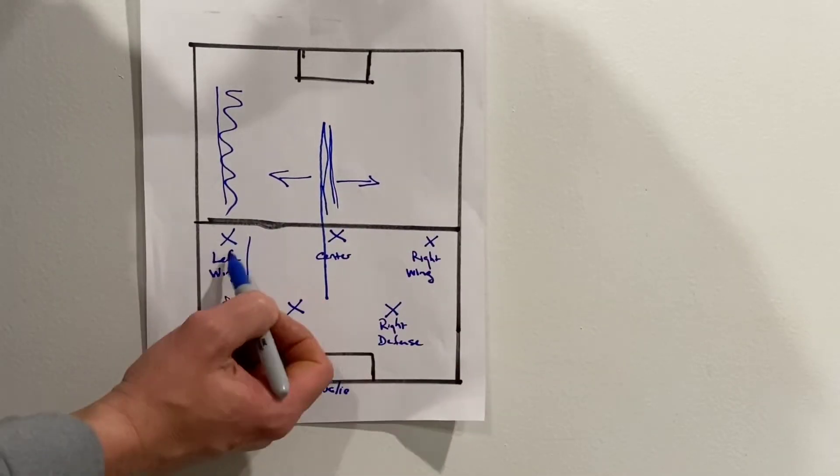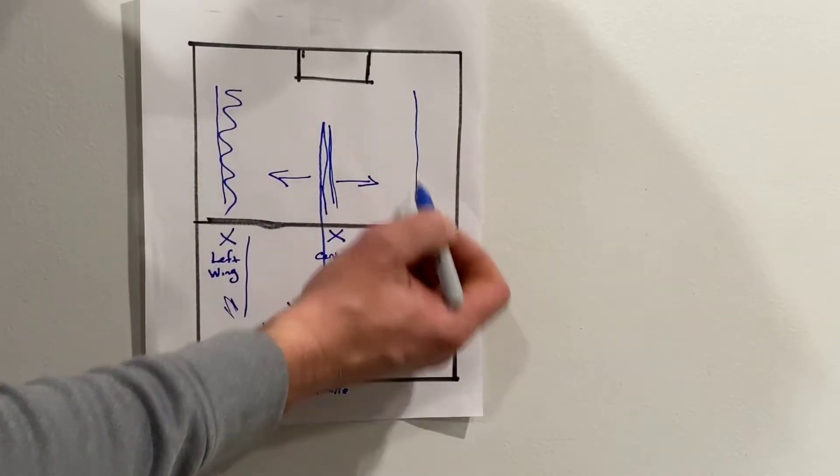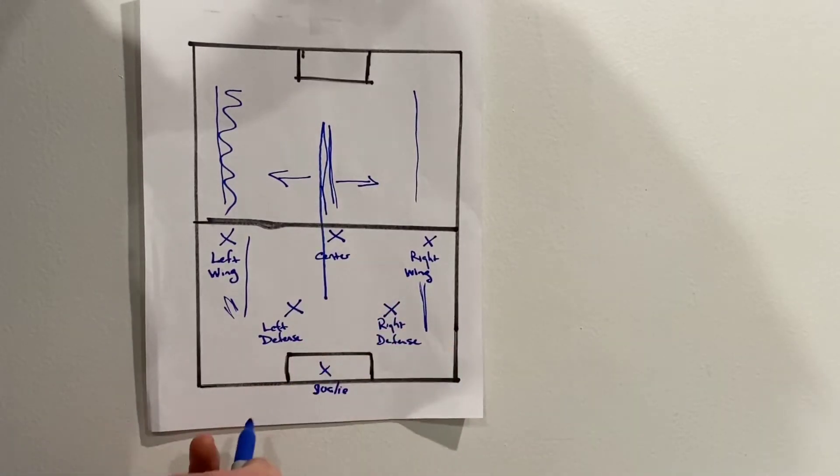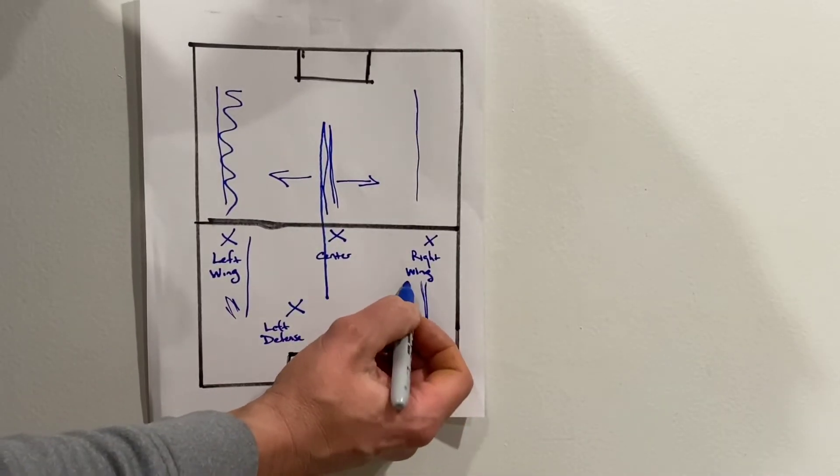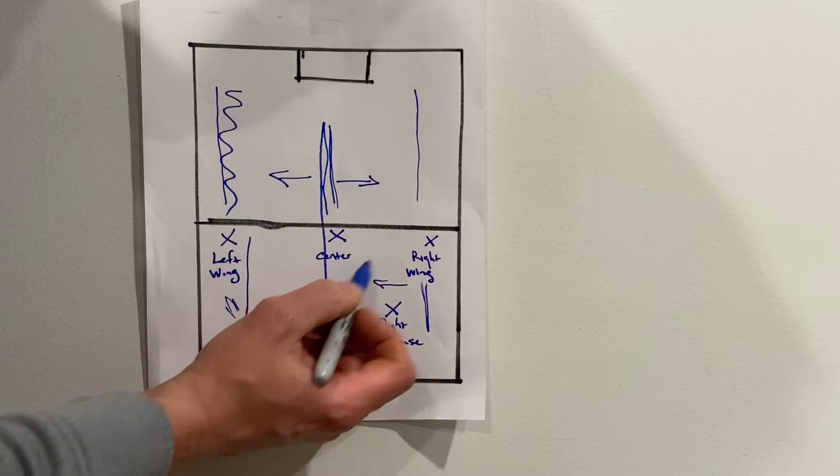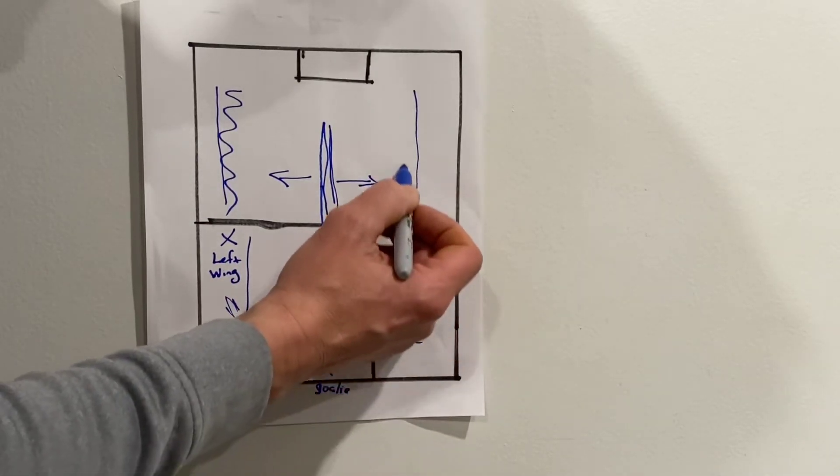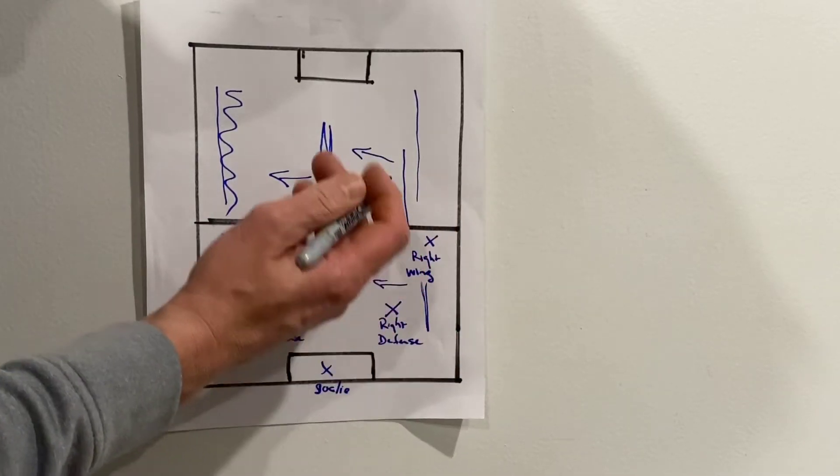The right wing, just like the left wing, is going to cover this area and this area. They can also come into the middle a little bit to help the center. As we come down, he can cheat into the center a little bit.